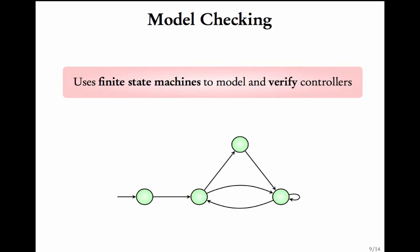However, testing does not ensure that there are no errors — there could be other cases where the code might behave incorrectly. Model checking follows a different approach. A mathematical model of the code is created, and requirements of the code are checked on these mathematical models. This check can be automatically performed by existing model checkers. Typical mathematical models are extensions of finite state machines. In this course, we will study this model checking technology.